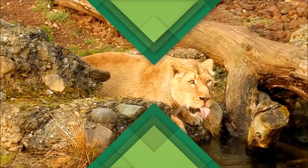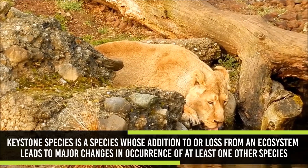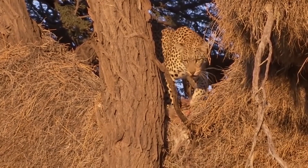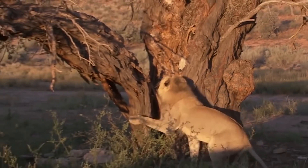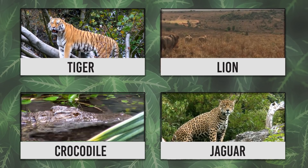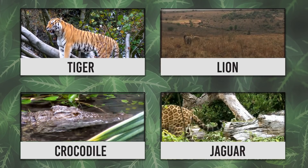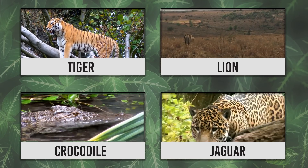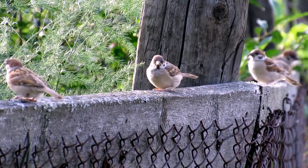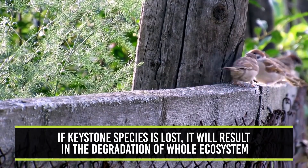Keystone Species and Foundation Species. A keystone species is a species whose addition to or loss from an ecosystem leads to major changes in the occurrence of at least one other species. A classic keystone species is a predator that prevents a particular herbivore species from eliminating the dominant plant species. Top predators such as lion, tiger, crocodile and jaguar are considered keystone species because they regulate all other animal populations indirectly. Hence, top predators are given much consideration in conservation. If a keystone species is lost, it will result in the degradation of the whole ecosystem.